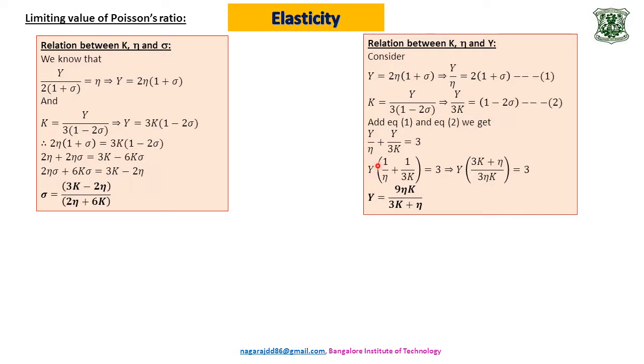Next, take Y common factor. It becomes 1 by eta plus 1 by 3k equals 3. Implies Y into, take LCM that is 3 eta k, so numerator becomes 3k plus eta, that is equal to 3. Then do cross multiplication: 3 eta k into 3, that is 9 eta k divided by (3k plus eta). So we have Y equals 9 eta k divided by (3k plus eta). This is the relation between Young's modulus, rigidity modulus and bulk modulus.